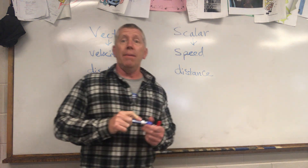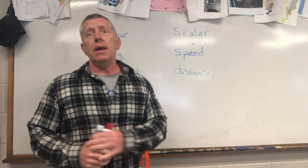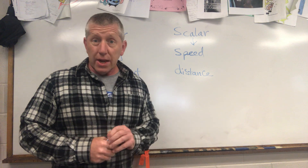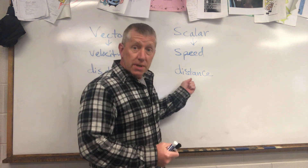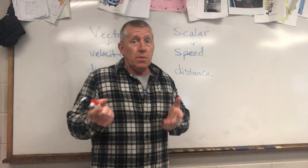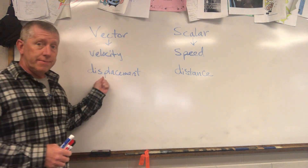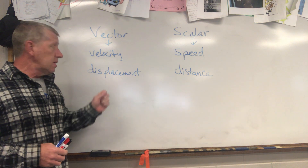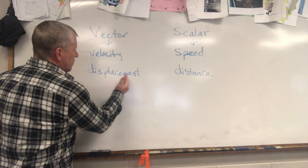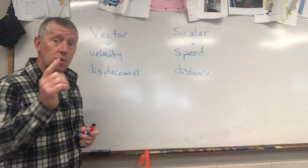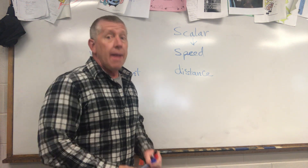An odometer tells you how many miles you've traveled — that's a scalar value. The odometer doesn't tell you what direction you're going. So if you knew you traveled 10 miles north, that would be a displacement because it has the direction associated with it. Displacement is also going to be a distance traveled in a direction as the crow flies — meaning in a straight line.